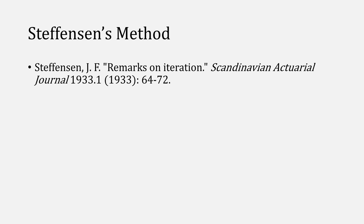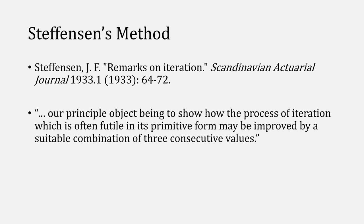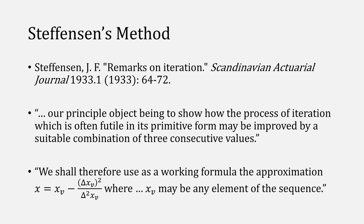Stephenson's method was first published in 1933 in a paper called 'Remarks on Iteration', where he's referring to fixed point iteration. He writes: 'Our principal object being to show how the process of iteration, which is often futile in its printed form, may be improved by a suitable combination of three consecutive values.' He also writes: 'We shall therefore use as a working formula the approximation this function, where x sub v may be any element of the sequence' — and that looks a lot like Aitken's delta squared method.